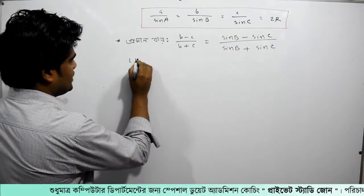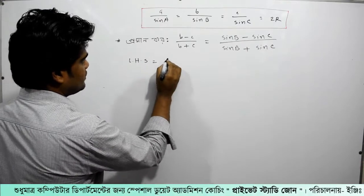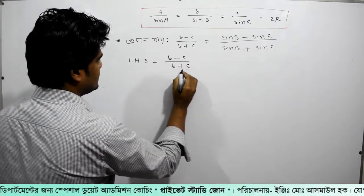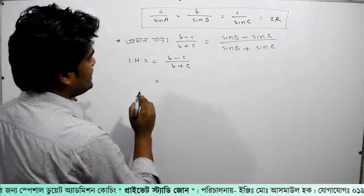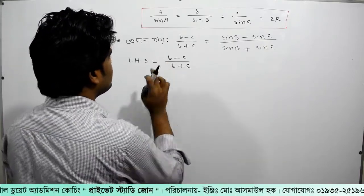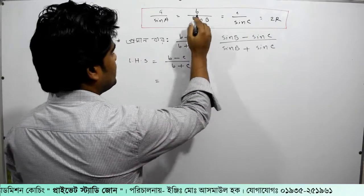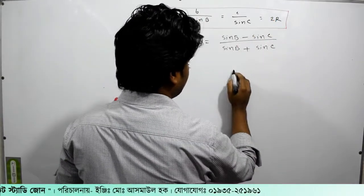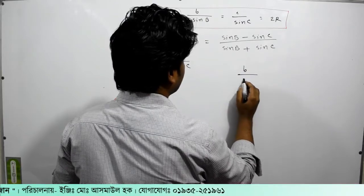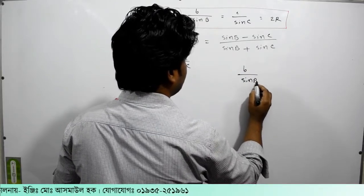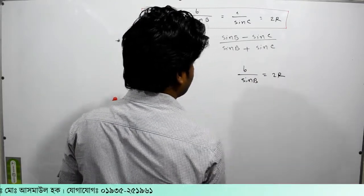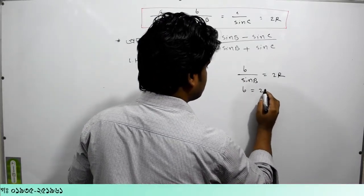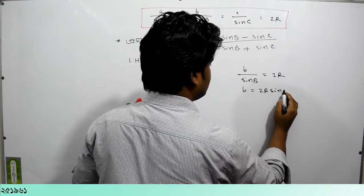We will get the left hand side now. A equals b minus c, b plus c equal to. The e is equal to, b equal to 2r. So, eta equal to b divided by sin b is equal to 2R. So, we have to write B equal to 2R sin B.